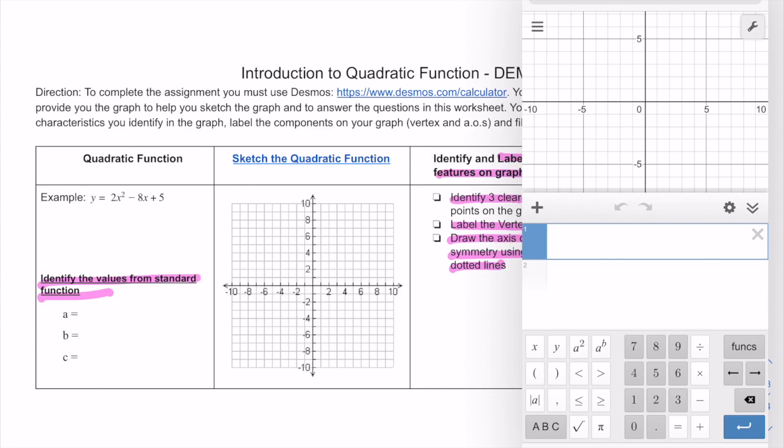So in our sample problem, my equation is 2x squared, so 2x² minus 8x, and notice as I'm typing the graph is changing, plus 5.